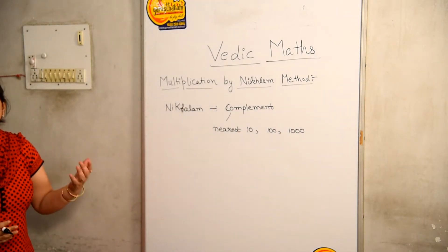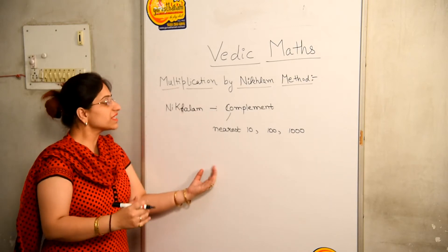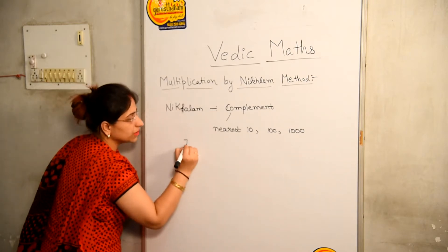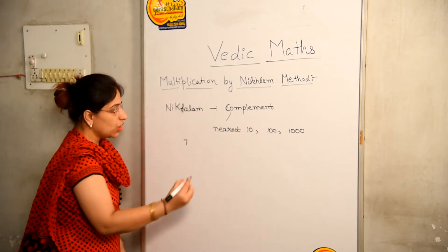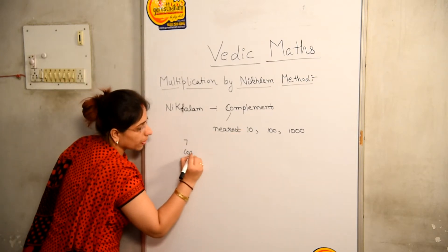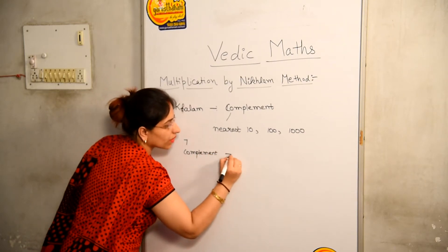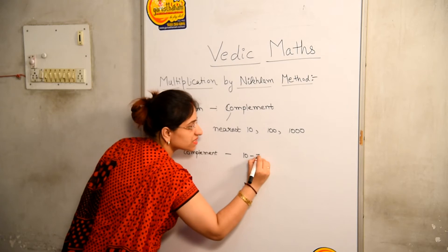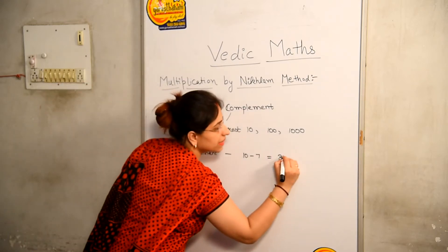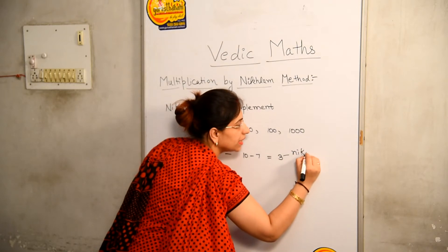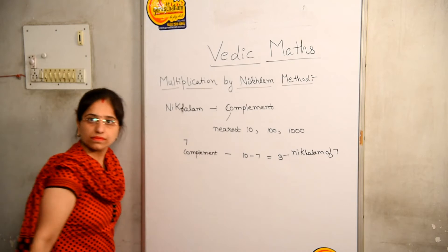It depends upon the number that we are using for multiplication. Now let us suppose I am having a number as 7. As it is very close to 10, so its complement will be 10 minus 7, that is 3. And 3 is the Nikhilam of 7.